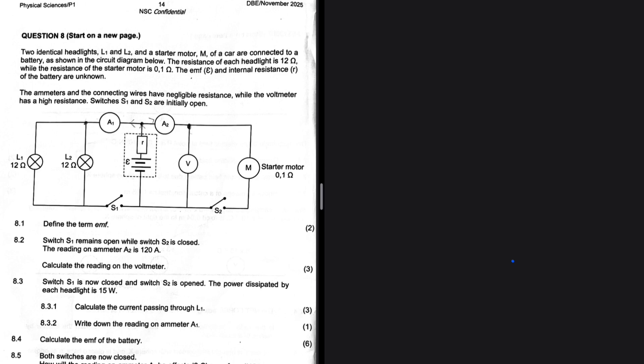8.2: Switch S1 remains open while switch S2 is closed. The reading on ammeter A2 is 120 ampere. Very high for current.